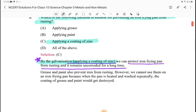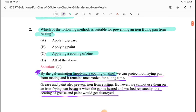Grease and paint also prevent iron from rusting. However, we cannot use them on iron frying pan because pan is heated and washed repeatedly. The coating of grease and paint would get destroyed. Because iron pan is used for cooking, the paint will be removed and the grease will be removed, but zinc coating will not be removed. So if someone has a frying pan, we will use zinc coating.